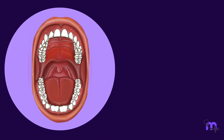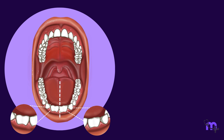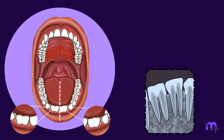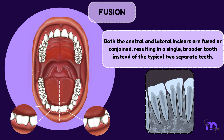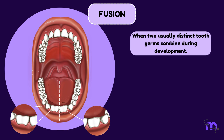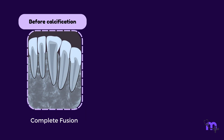It's quite noticeable that instead of the usual four separate teeth, there are only two incisors positioned on either side of the midline. Now, let's also examine the x-ray of the same area. What becomes evident is that both the central and lateral incisors are fused or conjoined, resulting in a single broader tooth instead of the typical two separate teeth. This is a developmental anomaly known as fusion. It occurs when two tooth germs which are typically separate unite during development. It is induced by physical forces or pressure that bring the developing teeth into contact with each other. When this contact happens before calcification, it can result in the complete fusion of the two teeth forming a single larger tooth.